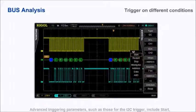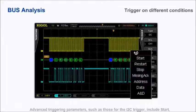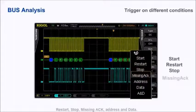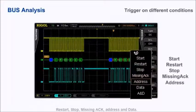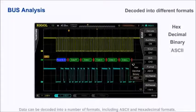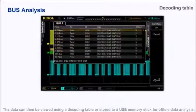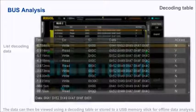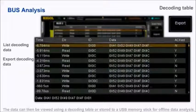Advanced triggering parameters such as those for I2C trigger include start, restart, stop, missing ACK, address, and data. Data can be decoded into a number of formats including ASCII and hexadecimal. The data can then be viewed using a decoding table or stored onto a USB memory stick for offline data analysis.